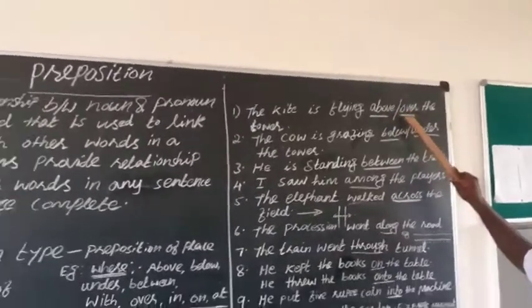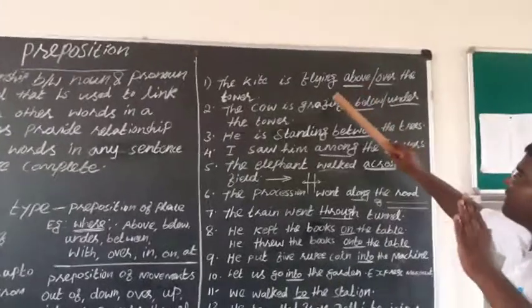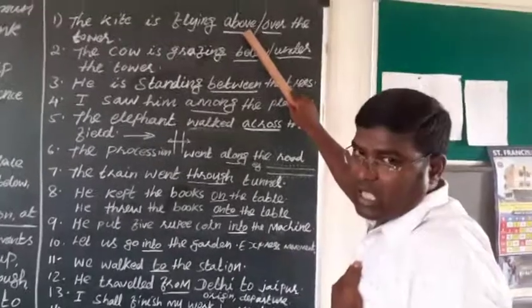Suppose you don't know exact location of the place. So, you can use the word above. Precise means over, but when you do not know exactly precise, in general, you are saying the kite is flying above, means you don't know the location. That time you use above.